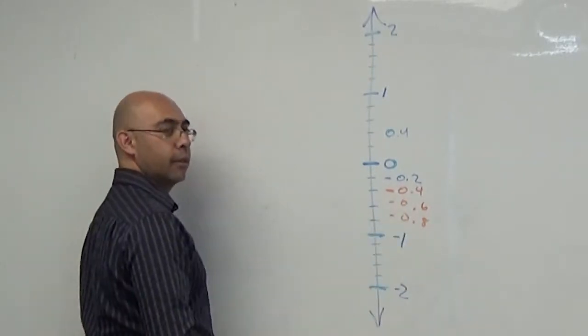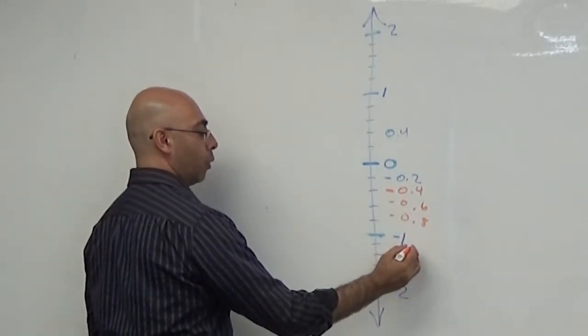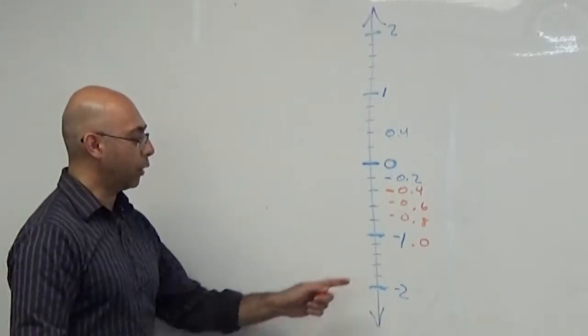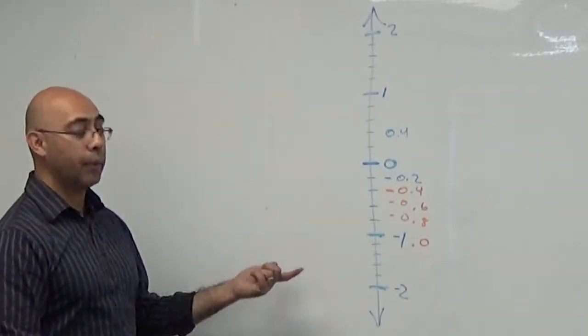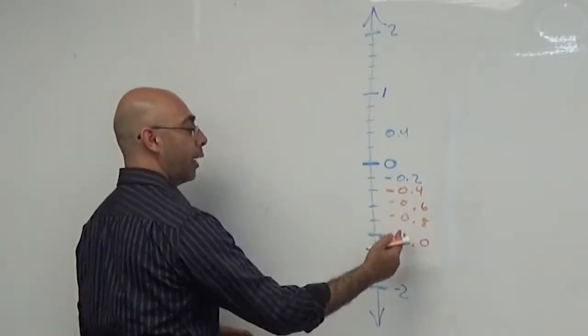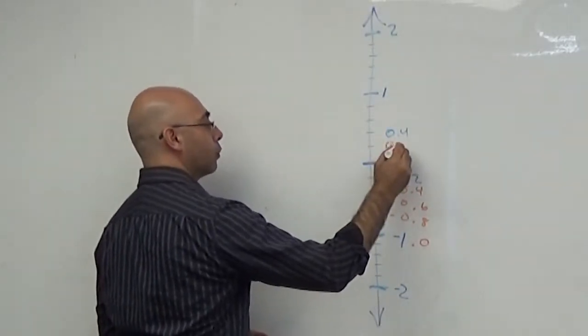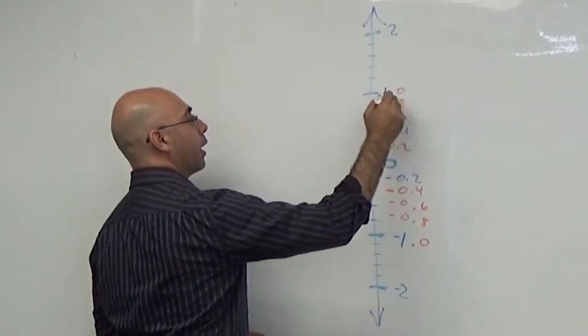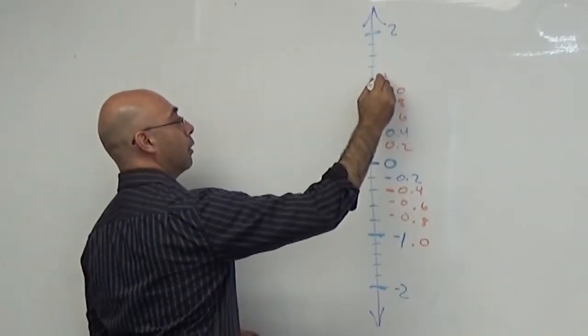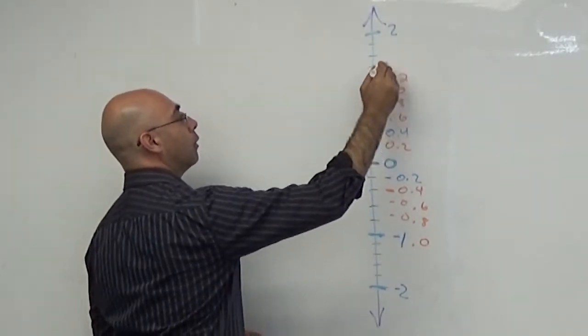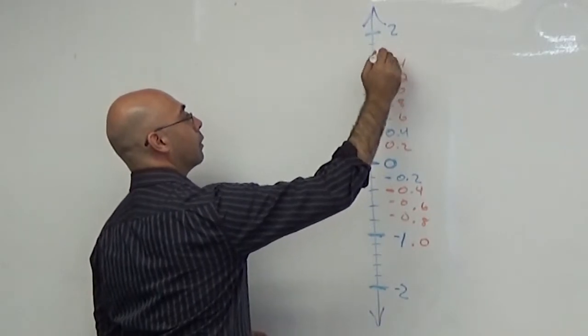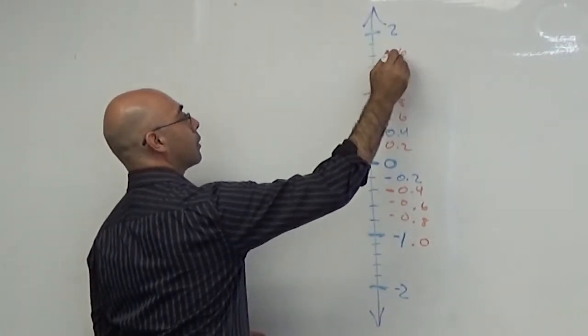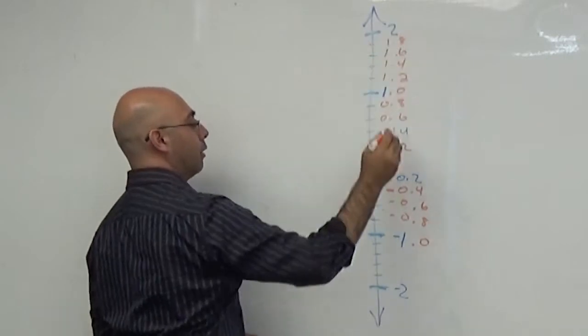So it'd be -0.2, -0.4, -0.6, -0.8, and what's after -0.8? -1.0. Oh, that's what a -1.0 is, isn't it? You can think of one as a ten. All right, good. So now we got the idea. That means if I'm going down by twos, I'm going up by 0.2, 0.4, 0.6, 0.8, 1.0, and what's after 1.0? 1.2, 1.4, 1.6, 1.8.